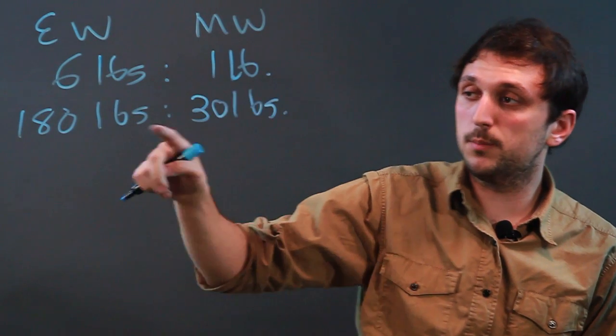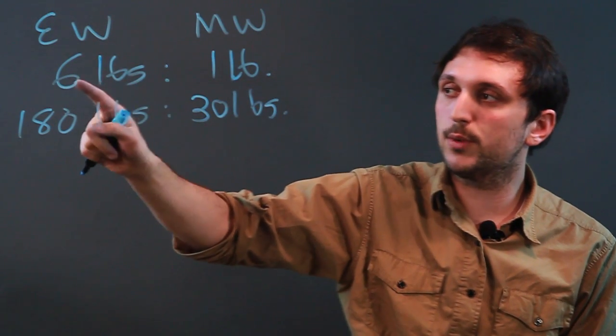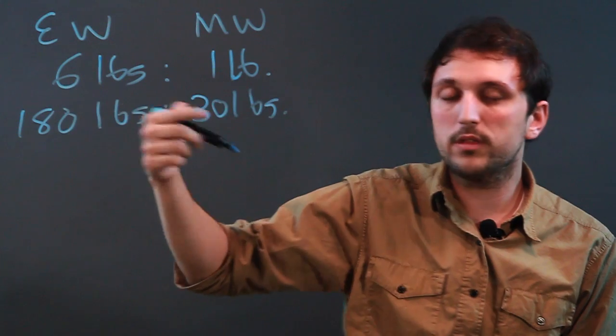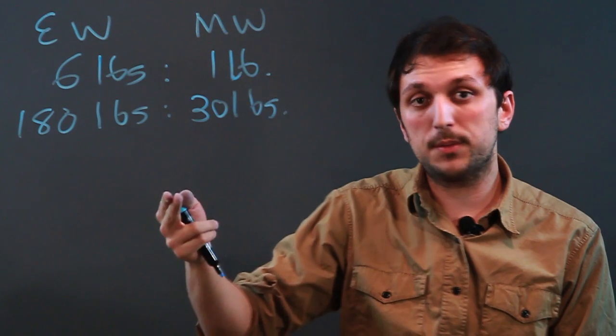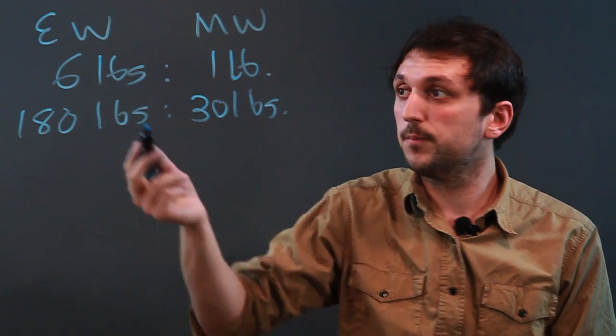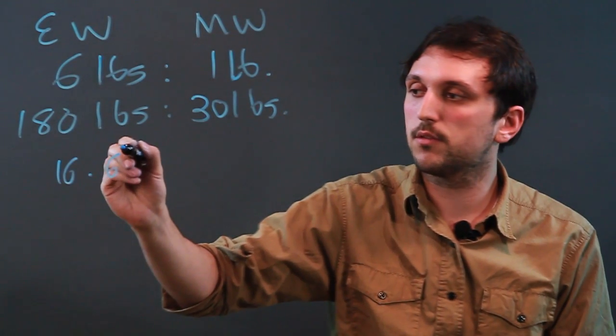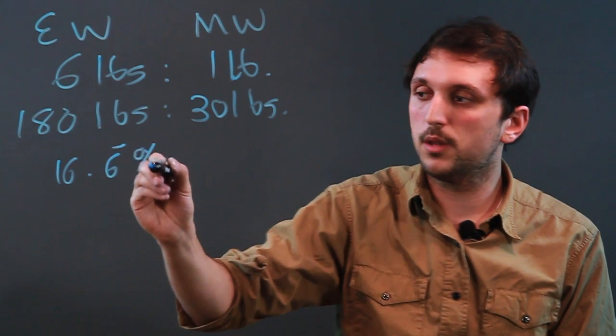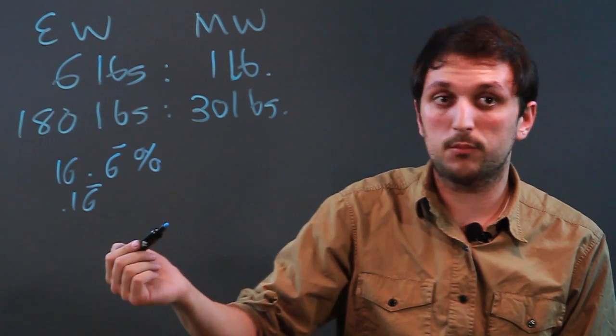Now the problem here is if you're using decimals. If you're trying to convert it with decimals, it's a little different because we can't just say six to one. One-sixth the fraction is a repeating irrational number. So it would be point six, or rather sixteen point six repeating percent, or point one six repeating in a decimal.